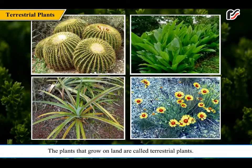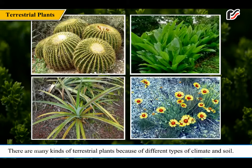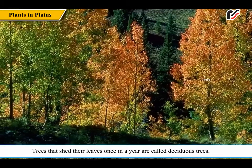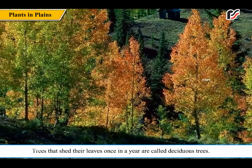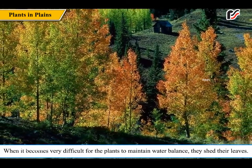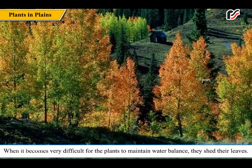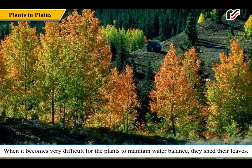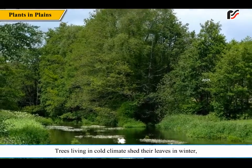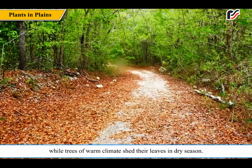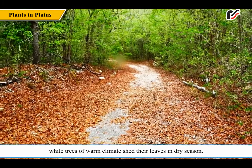The plants that grow on land are called terrestrial plants. There are many kinds of terrestrial plants because of different types of climate and soil. Trees that shed their leaves once in a year are called deciduous trees. When it becomes very difficult for the plants to maintain water balance, they shed their leaves. Trees living in cold climate shed their leaves in winter, while trees of warm climate shed their leaves in the dry season.